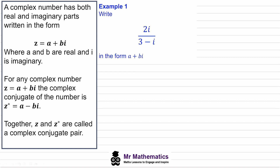In example one we've been asked to simplify this fraction into a plus bi form. We need to cancel out the negative i in the denominator, and the way we can do this is by finding the complex conjugate of the denominator, which will be three plus i.